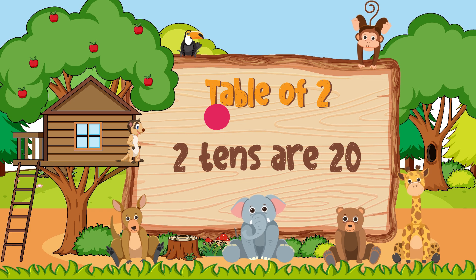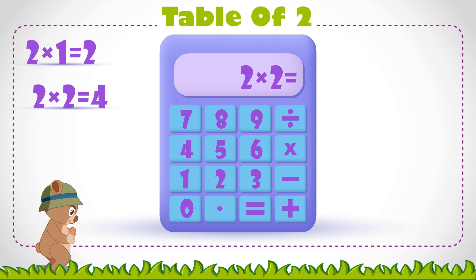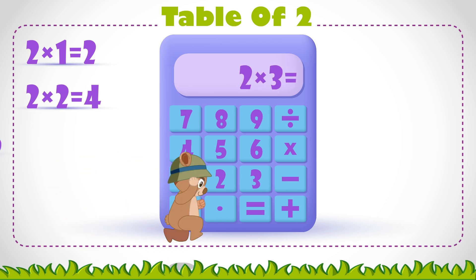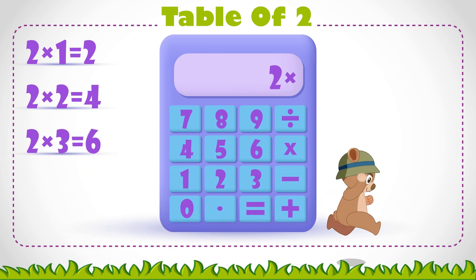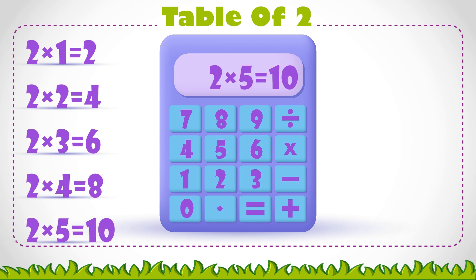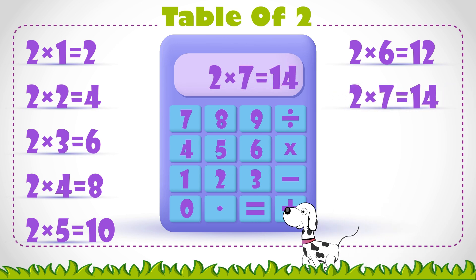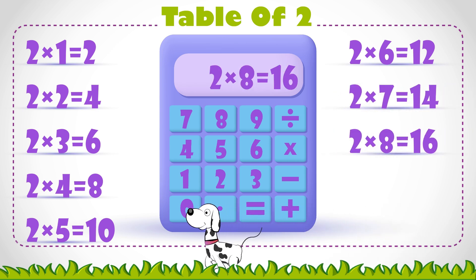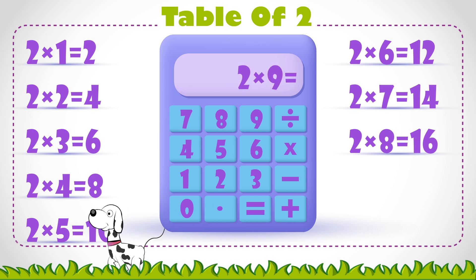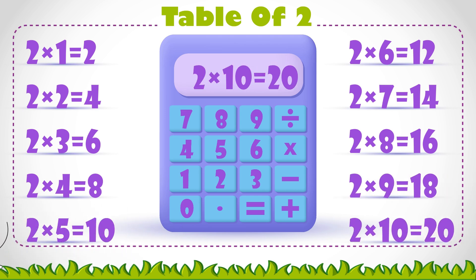Let's repeat. 2 1's are 2, 2 2's are 4, 2 3's are 6, 2 4's are 8, 2 5's are 10, 2 6's are 12, 2 7's are 14, 2 8's are 16, 2 9's are 18, 2 10's are 20.